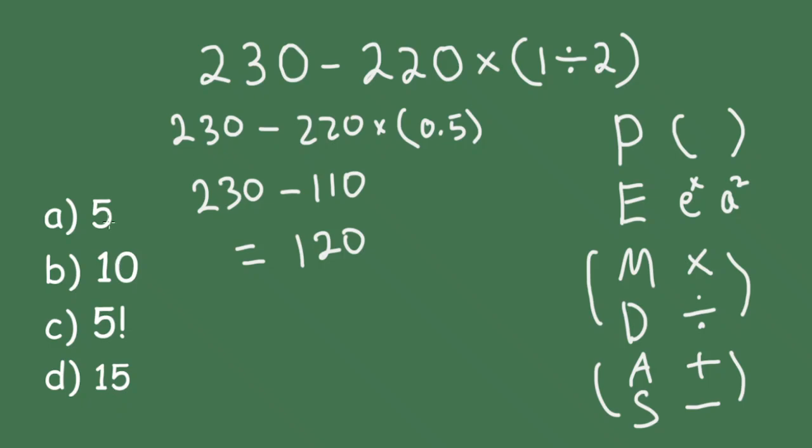Well, the 5 factorial, 5 factorial means 5 times 4 times 3 times 2 times 1. And that is equal to 120. So c, 5 factorial, is the correct answer.